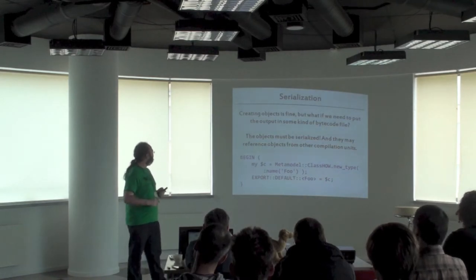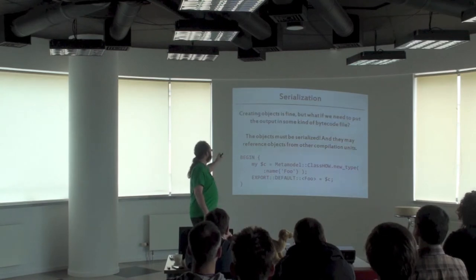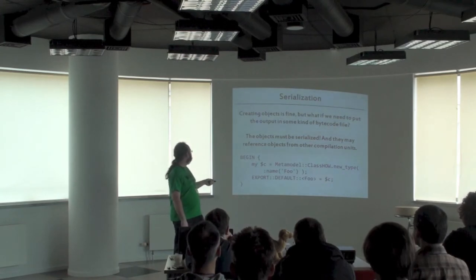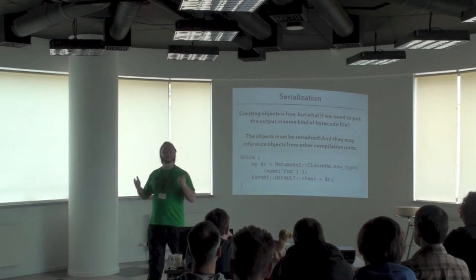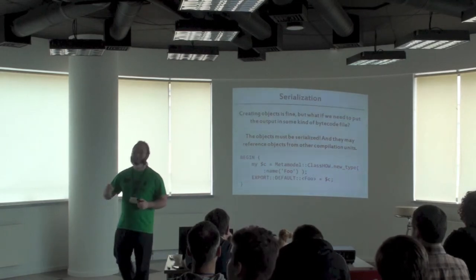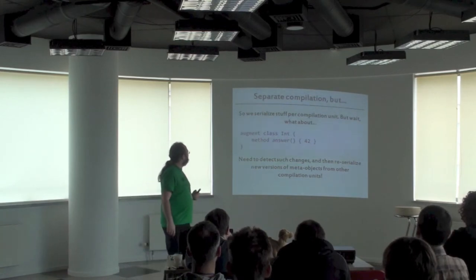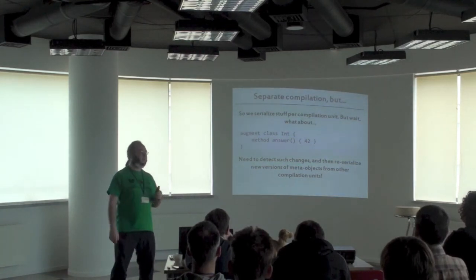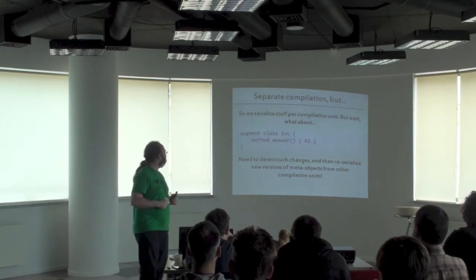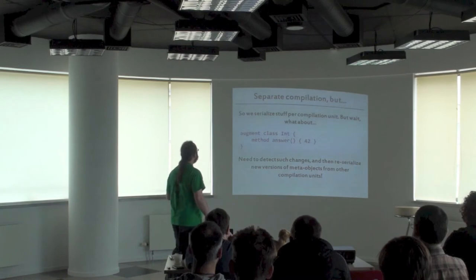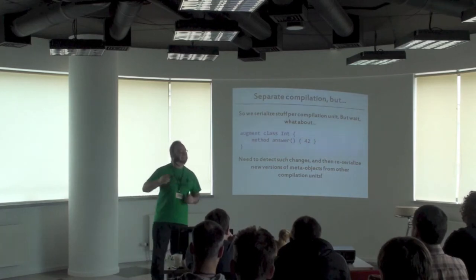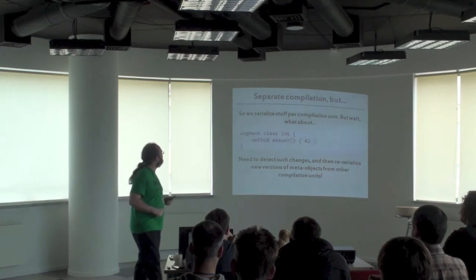If we need to take the built-ins library — which is 13,000 lines of code — compile it to bytecode and then just load it, we need to be able to serialize all of these objects. That's kind of fun because you can write a BEGIN block, create a new type called foo, and shoot it into the export matrix — creating an arbitrary type without even a proper class declaration. And with augment, you can take an existing class like the int class and add an extra method. If you do that, you have to detect the change and re-serialize a new version — so there's all kinds of fun going on inside.